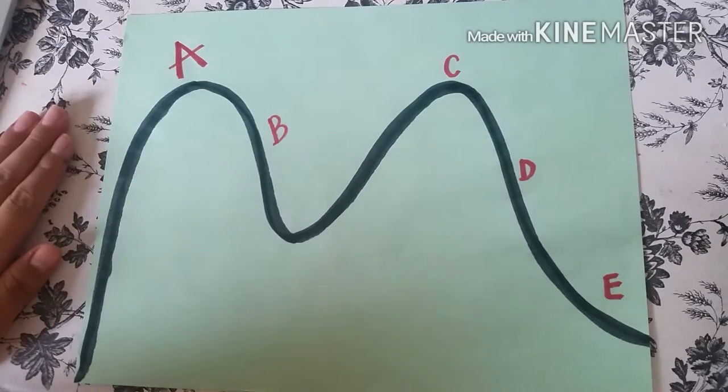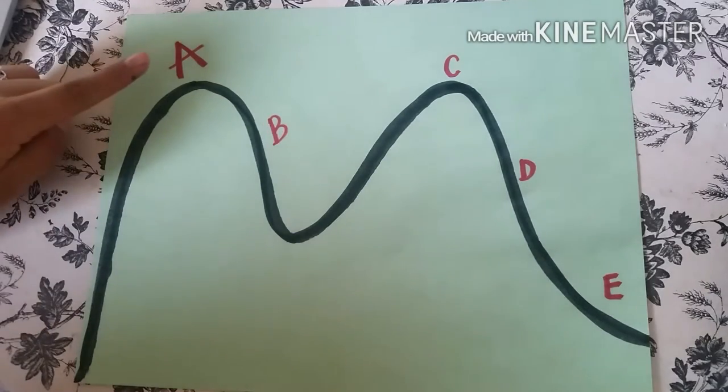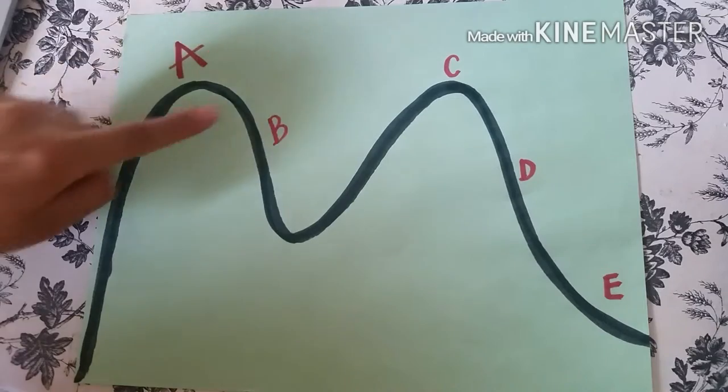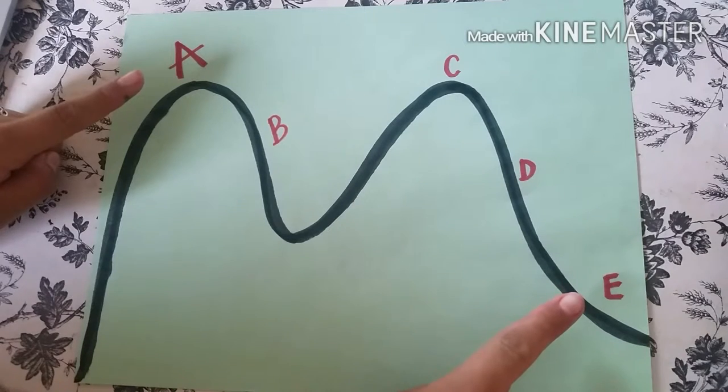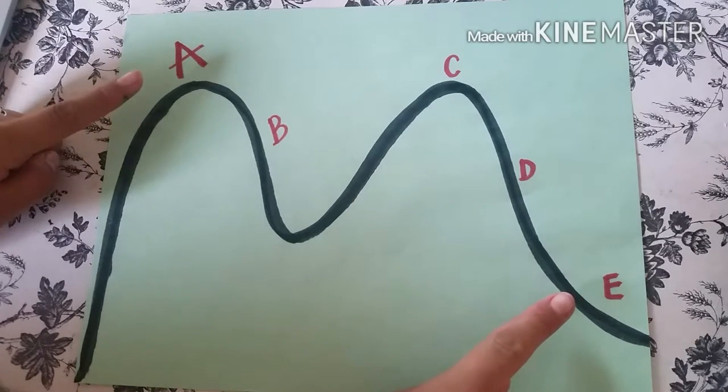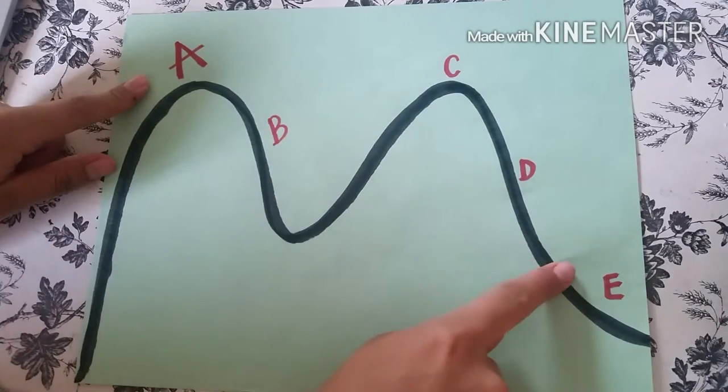In this picture you can see that at location A, the roller coaster is all potential energy. And at location E, the roller coaster is all kinetic energy. Therefore, within A and E, one is losing potential energy and gaining kinetic energy.